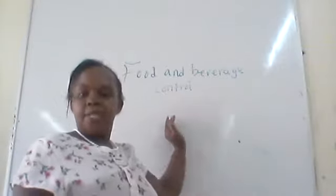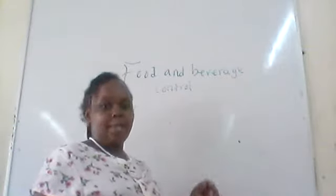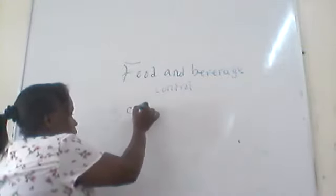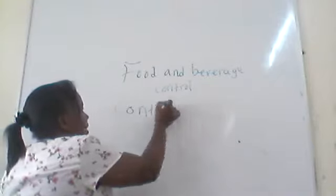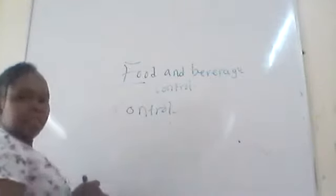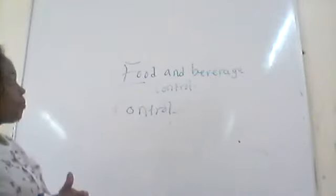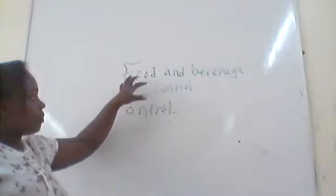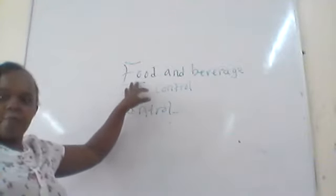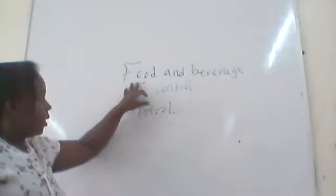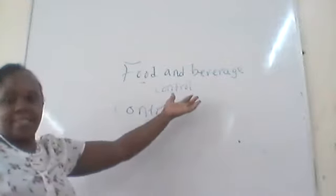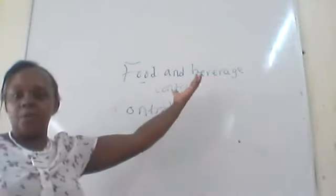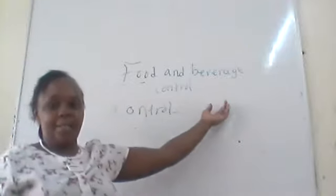We are going to start by definition of terms. The first term we need to define is control. Food — any item that is consumed for nourishment. Beverage — these are drinks, and I classify them in two ways: we have alcoholic and non-alcoholic beverages.